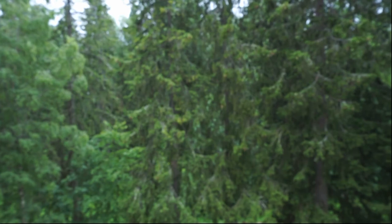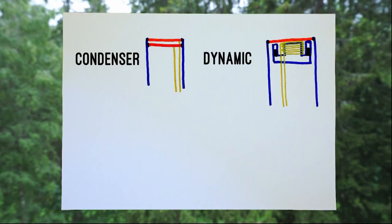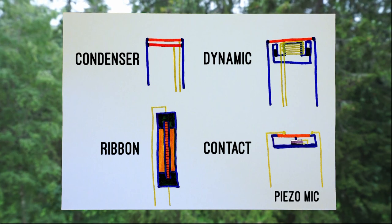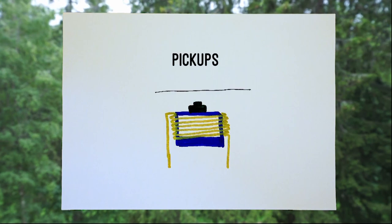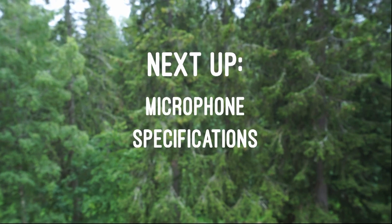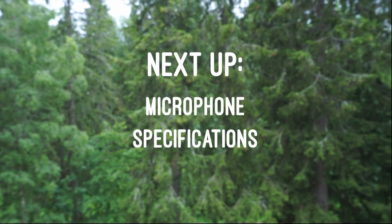So to sum up, we've looked at four main categories of microphones: condenser, dynamic, ribbon, and contact microphones. In addition, we also looked at a type of contact mic, the piezo microphone, and lastly at pickups. During the next tutorial, we will dive deeper into important microphone specifications, what they mean and how they influence what kind of recording you get.